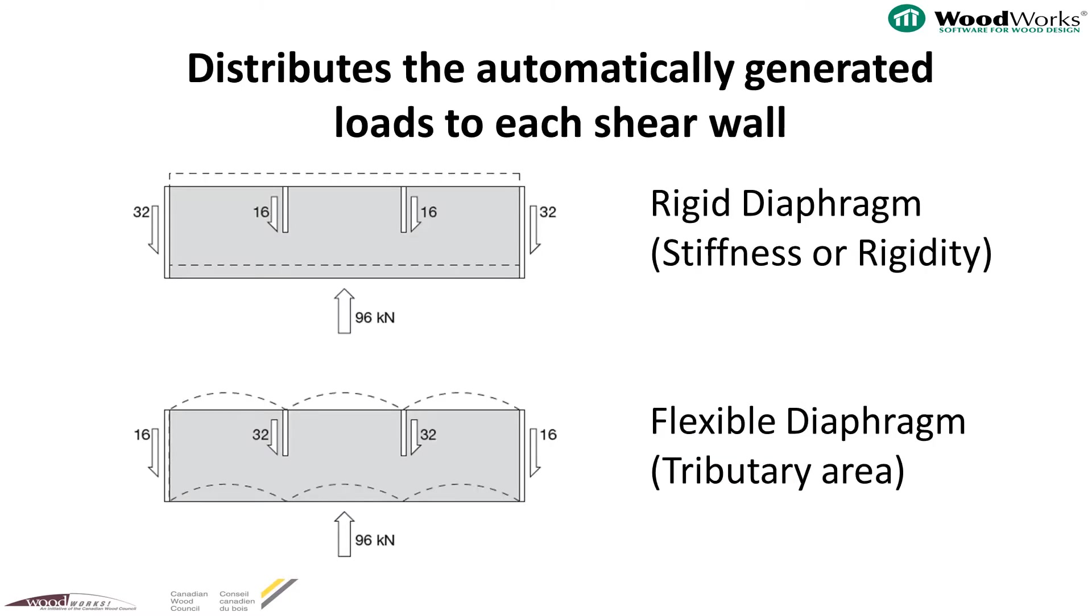Here we show the difference between distributing forces using rigid and flexible diaphragm assumptions. Say there is a total story force of 96 kN, and all the walls have the same framing details, but the walls on the ends are twice as long as the two interior walls.